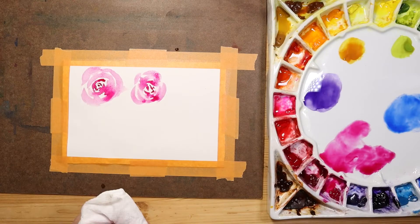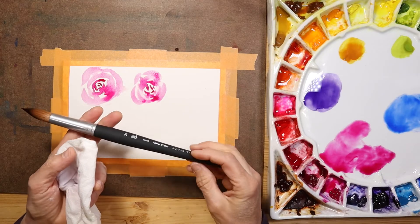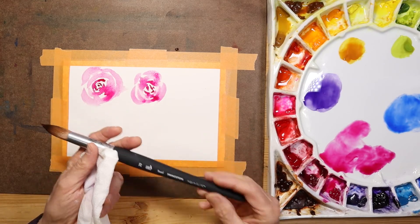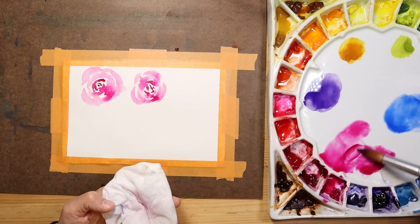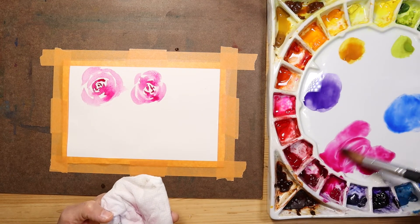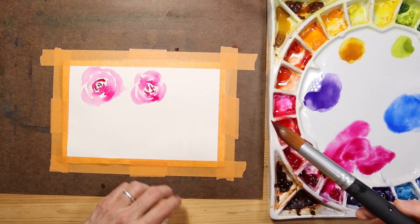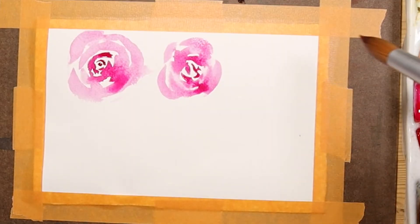Now, here's the real test. Let's take the Princeton Aqua Elite 20 round, number 20 round. A lot of people would be hesitant to pick up a number 20 to paint a delicate rose. Let's see what we can do here.